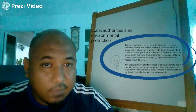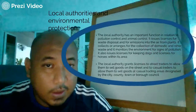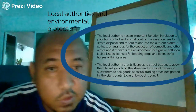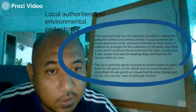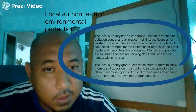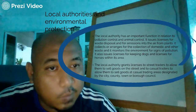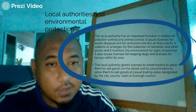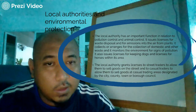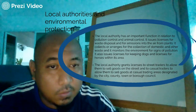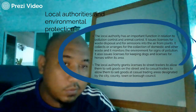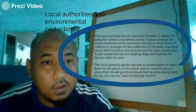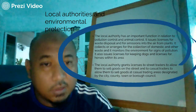Under environmental protection, the local authority has an important function in relation to pollution control and animal control. It issues licenses for waste disposal and for emissions into the air from plants. It collects domestic and other waste, monitors the environment for signs of pollution, issues licenses for keeping dogs and houses within its area, and grants licenses to street traders to allow them to sell goods in casual trading areas designated by city, county, town, and broad councils.